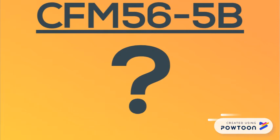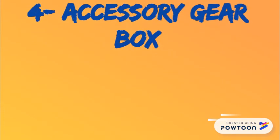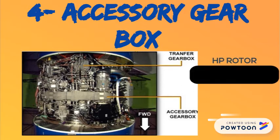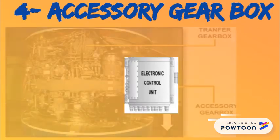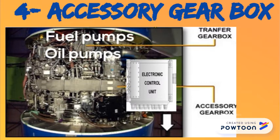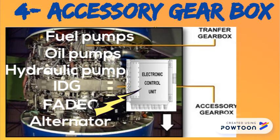Our last major component is the accessory gearbox. It is located at the bottom of the fan case and is driven by the high-pressure rotor through the transfer gearbox. The accessory gearbox components are the fuel pumps, oil pumps, hydraulic pump, IDG or integrated drive generator, and the FADEC alternator, which provides the engine control unit with electric power.